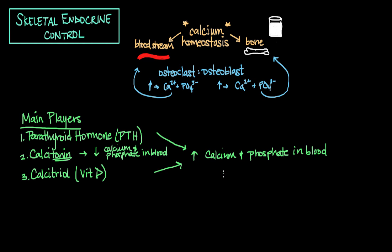There are a couple of general themes here. First, each time calcium increases in the blood, there is a concurrent increase of phosphate — they go together. The same is true if calcium decreases in the blood: phosphate will also decrease. Additionally, as calcium or phosphate increases in the blood, there is a concurrent decrease of these ions in bone, because it has to be coming from bone. Conversely, when calcium and phosphate decrease in the bloodstream, it's because they are being deposited back into bone.